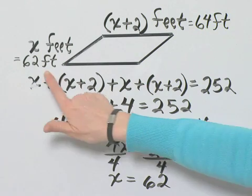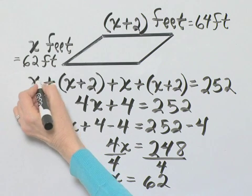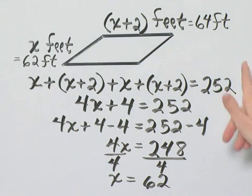Notice these are then consecutive even integers. If you find the perimeter, the perimeter is 252.